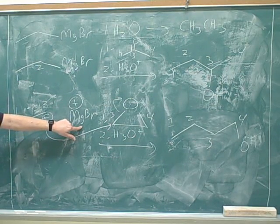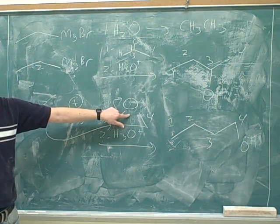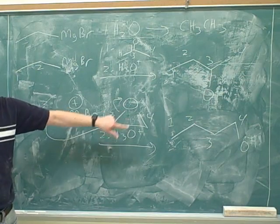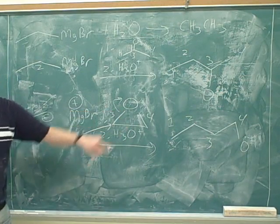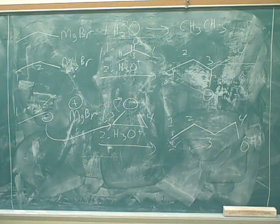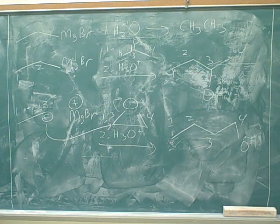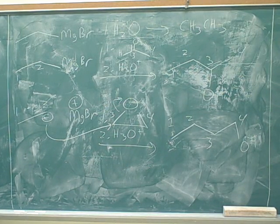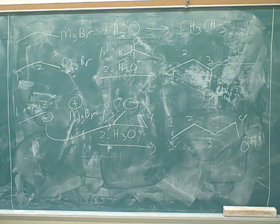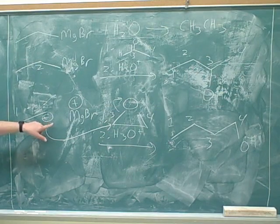I guess I should call it oxycyclopropane — whatever your instructor calls it. There are lots of different names for this. Some people call it an epoxide, some people call it oxycyclopropane. Epoxide is better because it's shorter. So the two ways are: a Grignard attacking a carbonyl, or a Grignard attacking an oxycyclopropane. You can see that's what happened here — we did form a new carbon-carbon sigma bond.